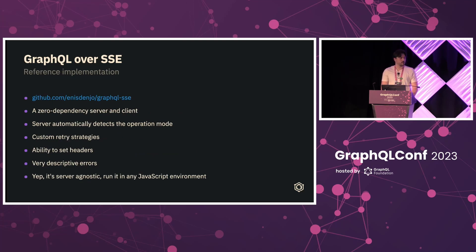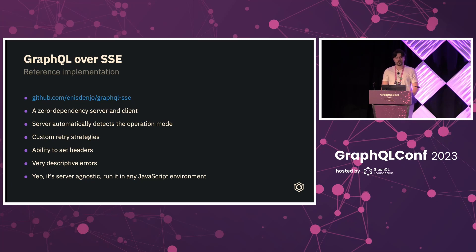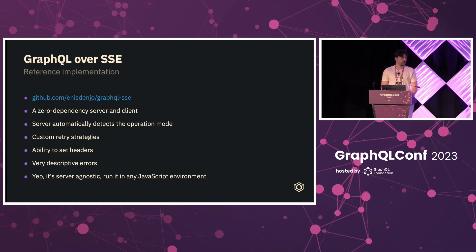Our reference implementation goes along with the spec — GraphQL SSE is also a zero-dependency implementation of both the server and the client. One cool thing is that the server automatically detects the operation mode — distinct connections or single connection — and behaves accordingly. The client is pretty advanced too, offering a custom retry strategy where you can decide exactly when you want to retry, like having a health check on a server and only starting the retry process when the server becomes healthy. Since GraphQL SSE uses a custom implementation of SSE and not the browser-native event source, you're able to set custom headers, add a body to the request, and experience very descriptive errors. Like all the libraries mentioned, GraphQL SSE is server-agnostic and can run in any JavaScript environment.